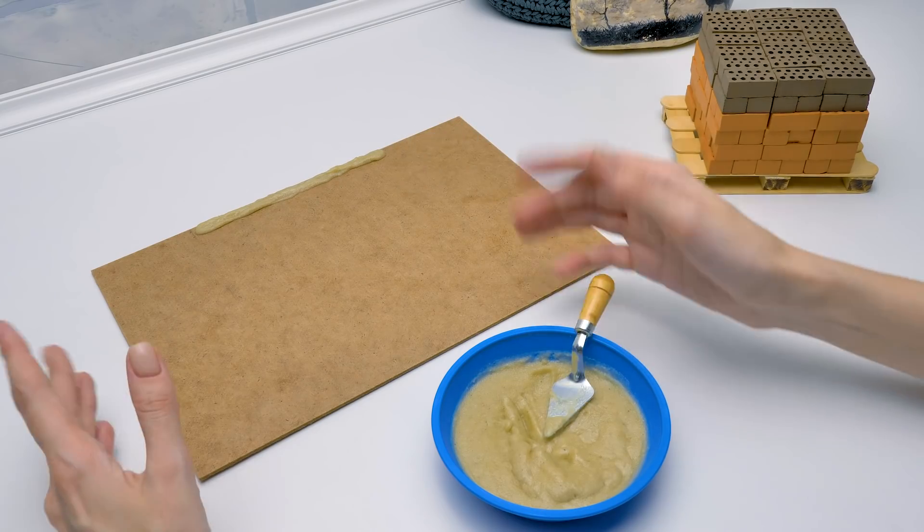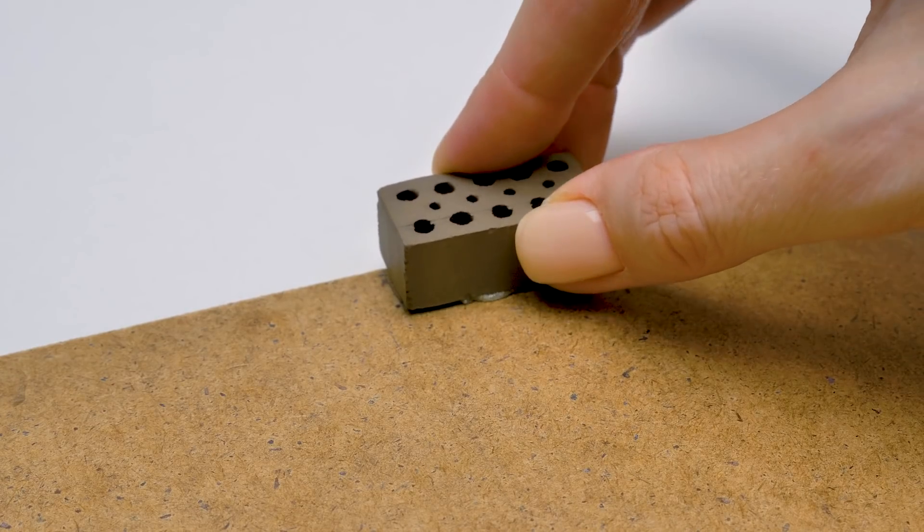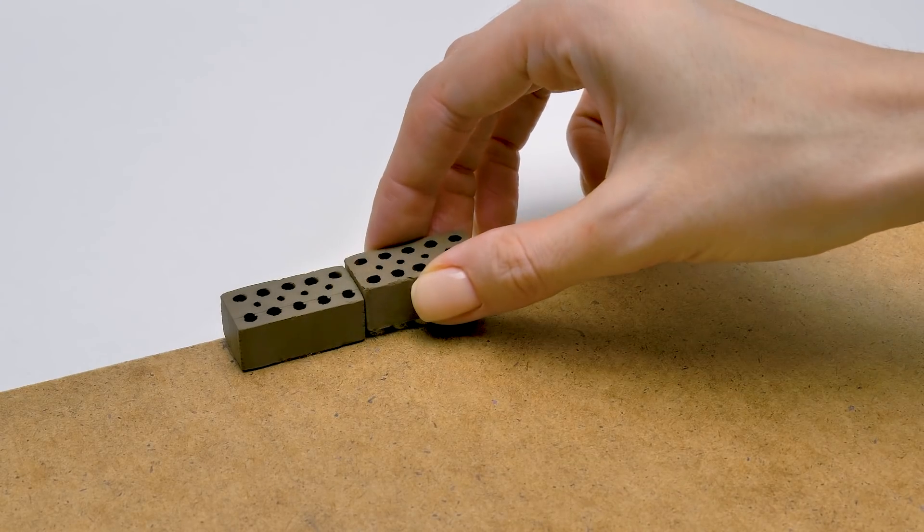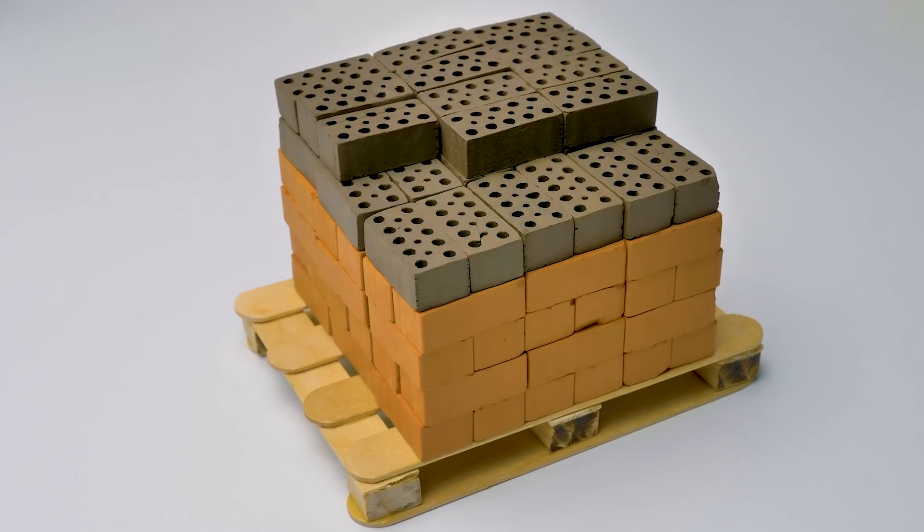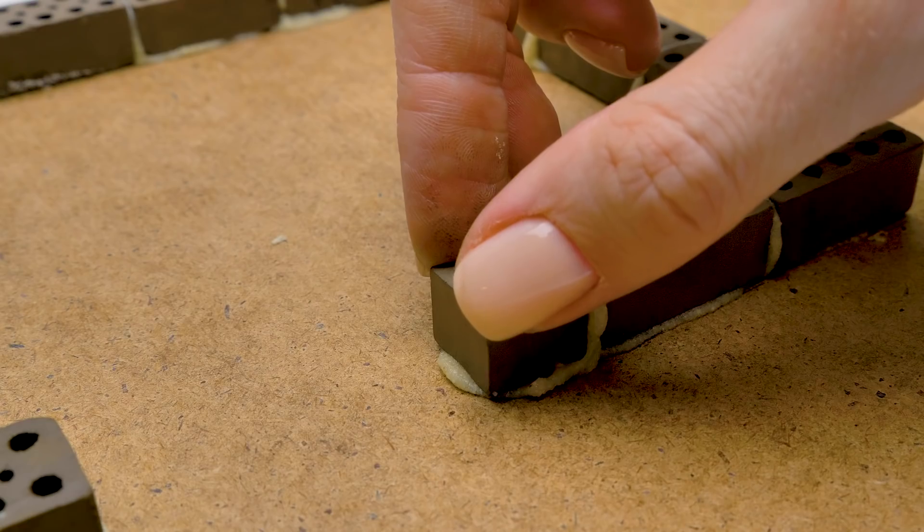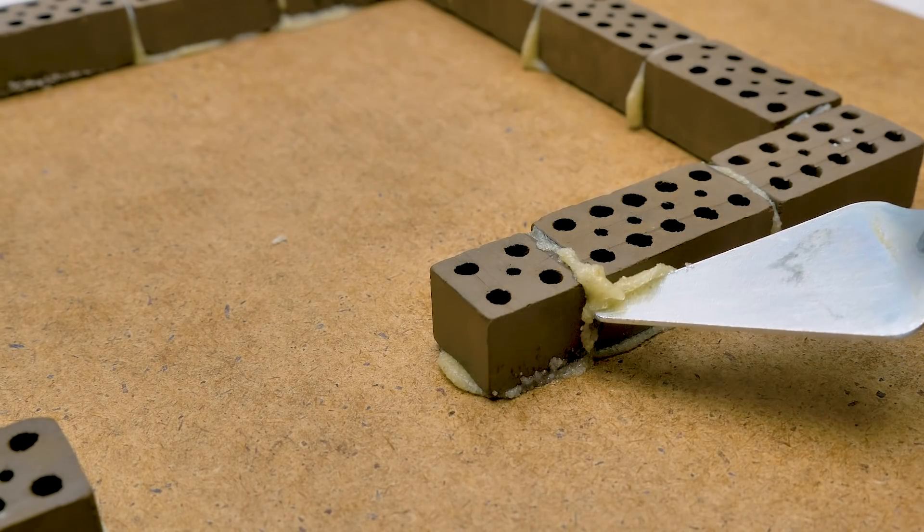There we go. And as usual, carefully. Brick by brick, we start building our house. This task needs patience. And the last brick goes here. Let's carefully remove the extra material. We are quite thrifty builders.